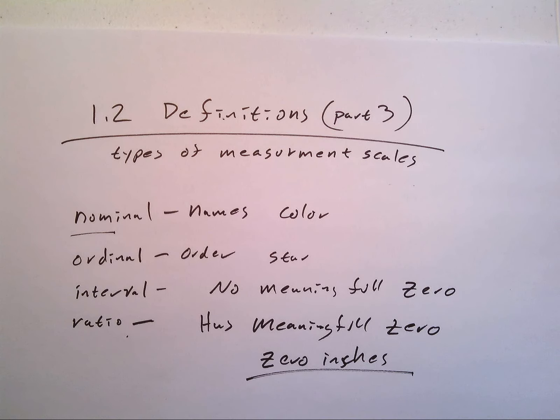All right, so 1.2 definitions part 3, types of measurement scales. When I think about types of measurement scales, there's four types we're going to be talking about: nominal, ordinal, interval, and ratio.